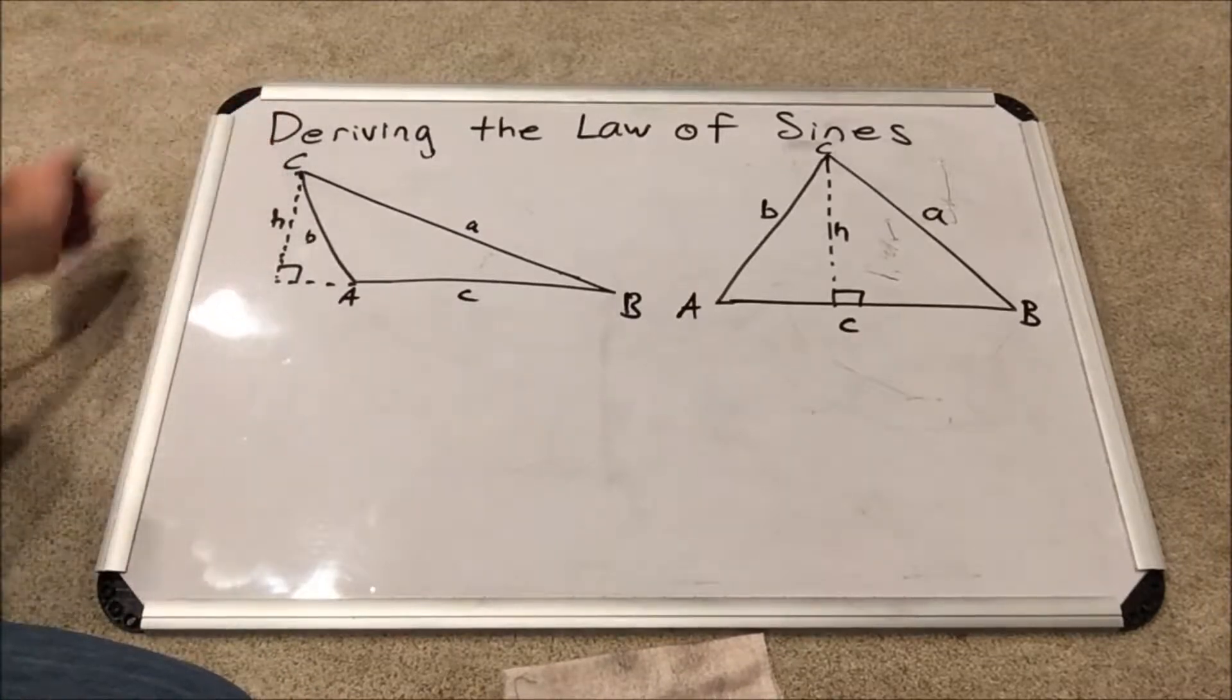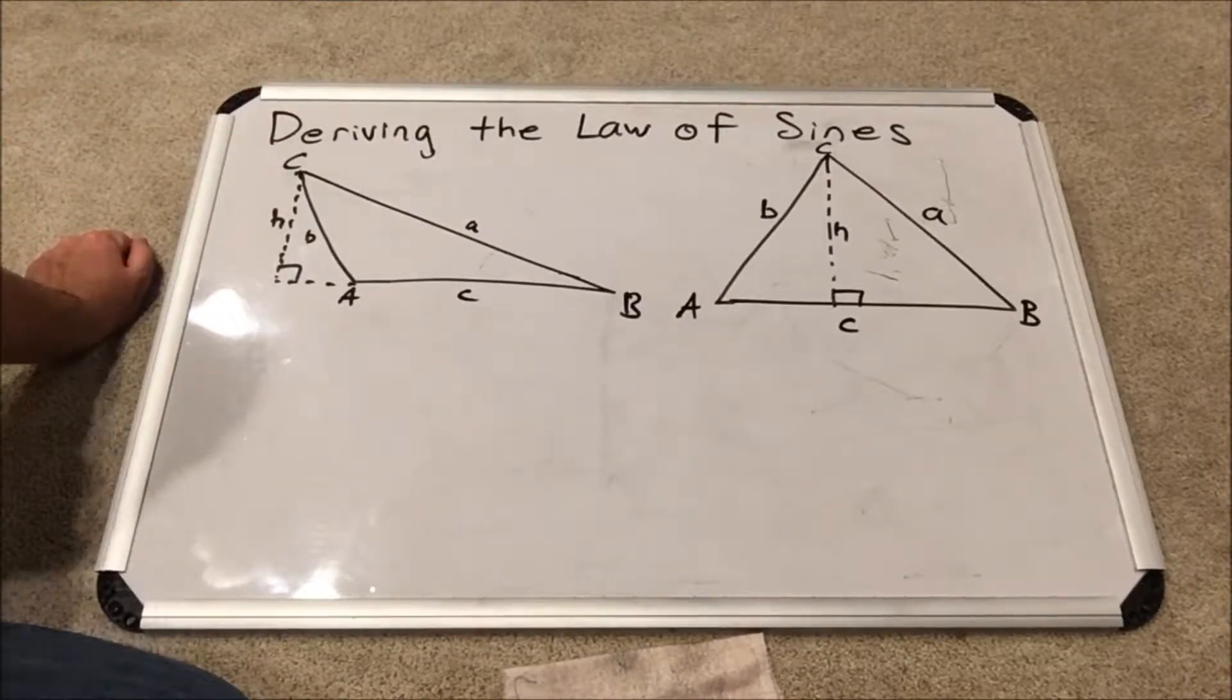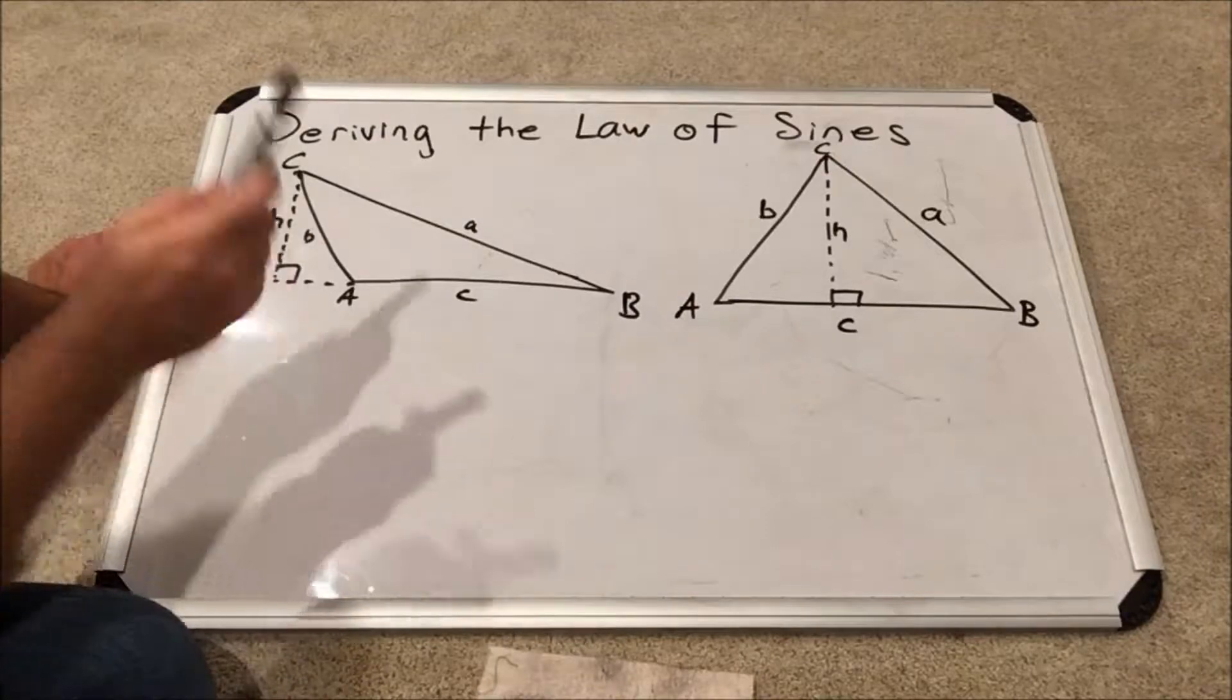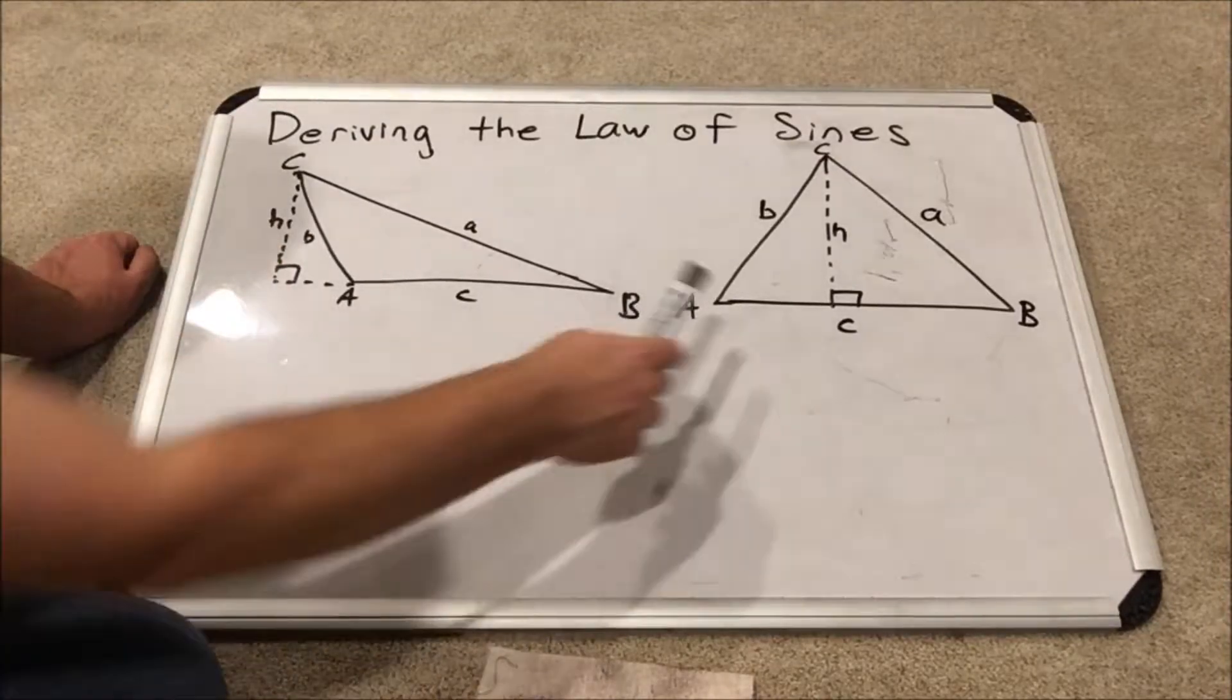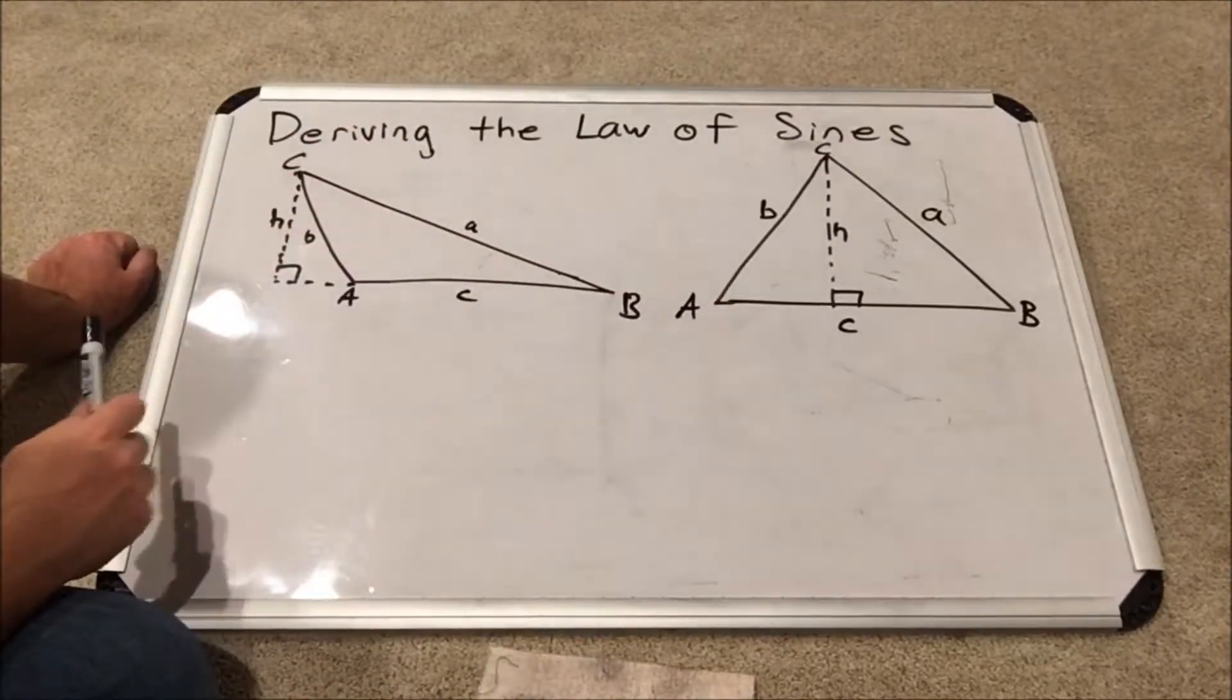Now in order to derive the law of sines we are going to need some model triangles. We can either use an obtuse oblique triangle or an acute oblique triangle.